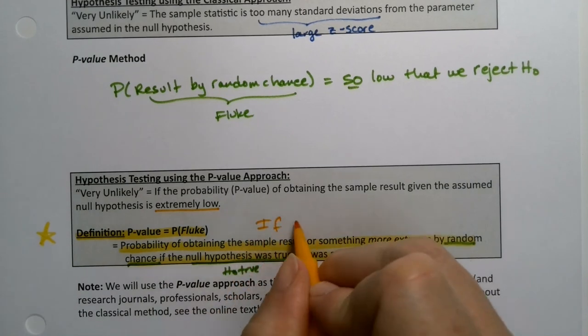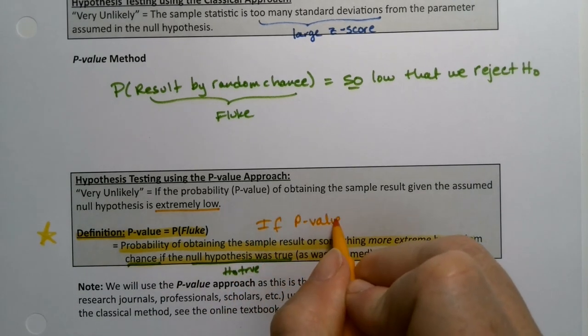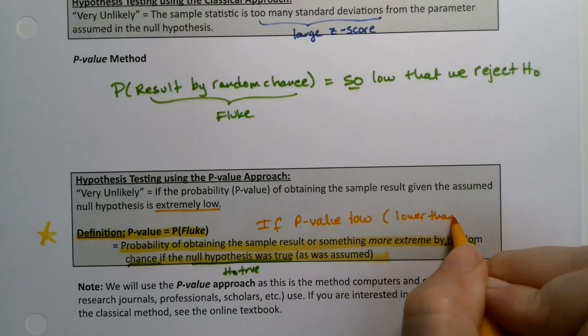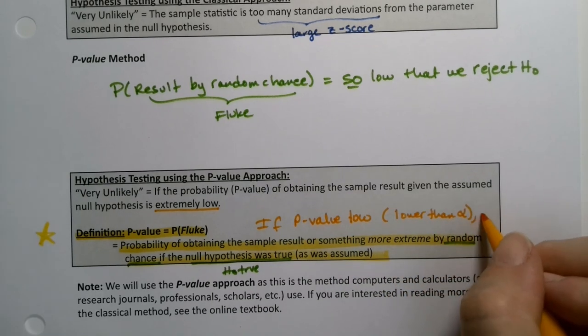So if the p-value is low, how low? Lower than alpha. The probability of the type one error, we reject H₀.